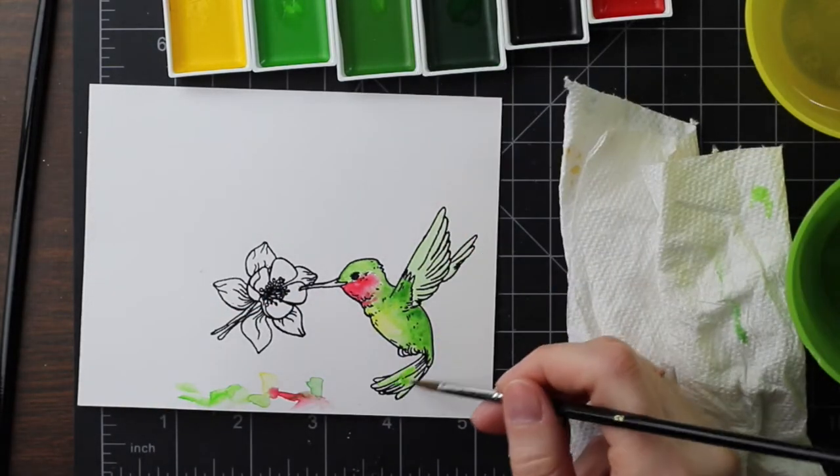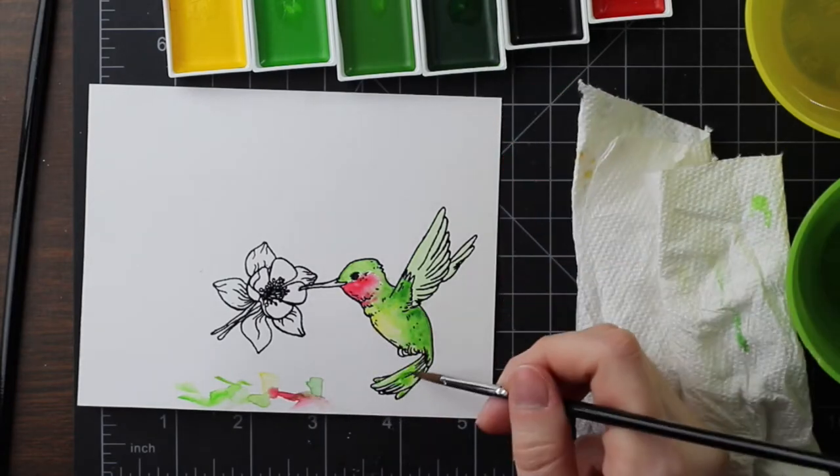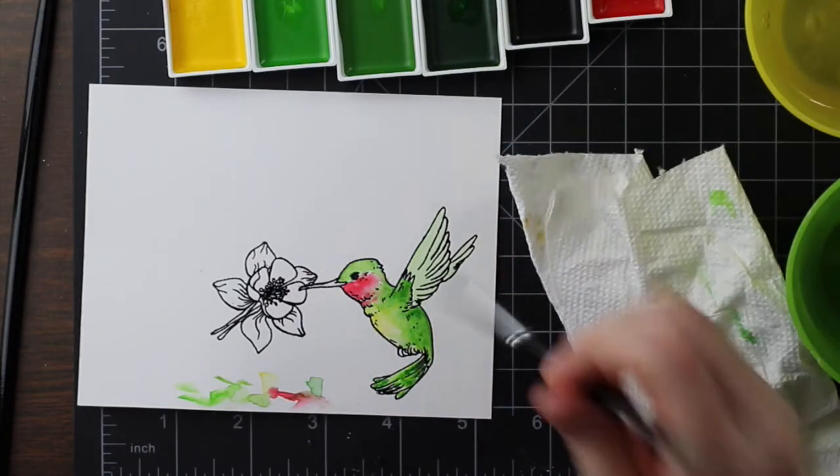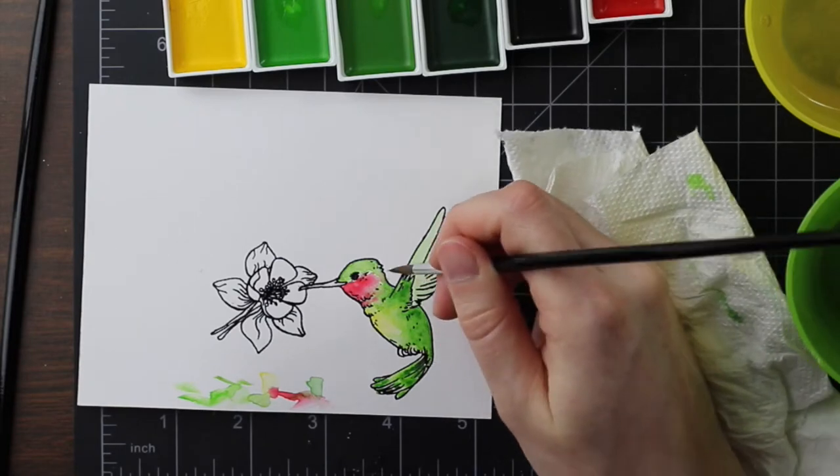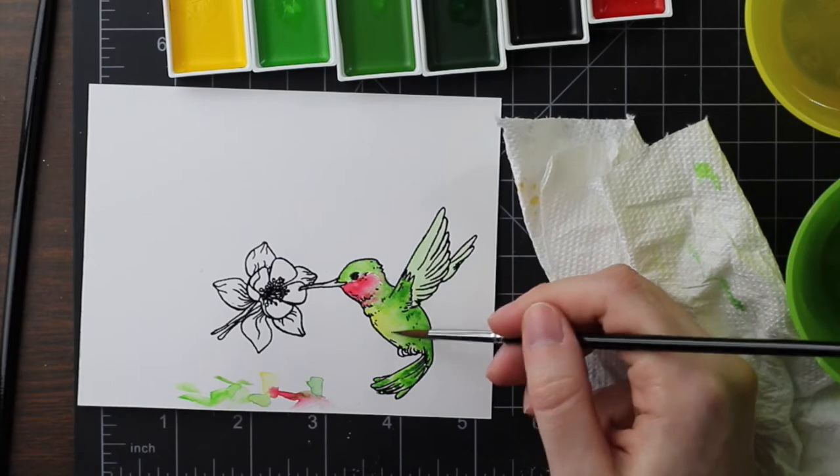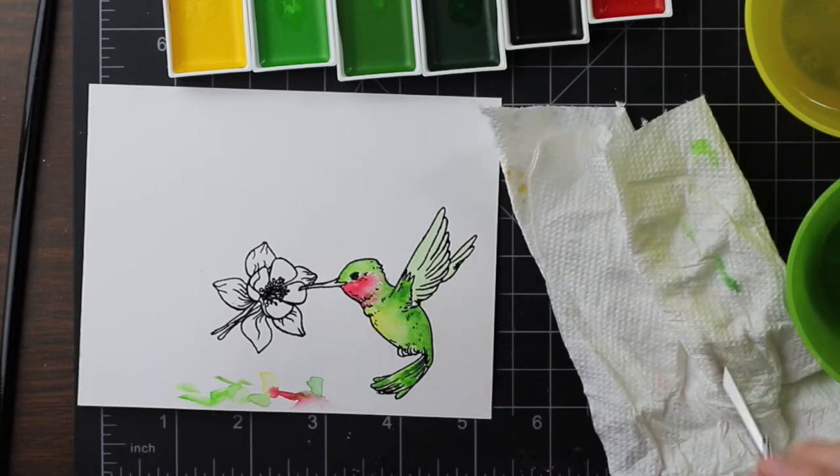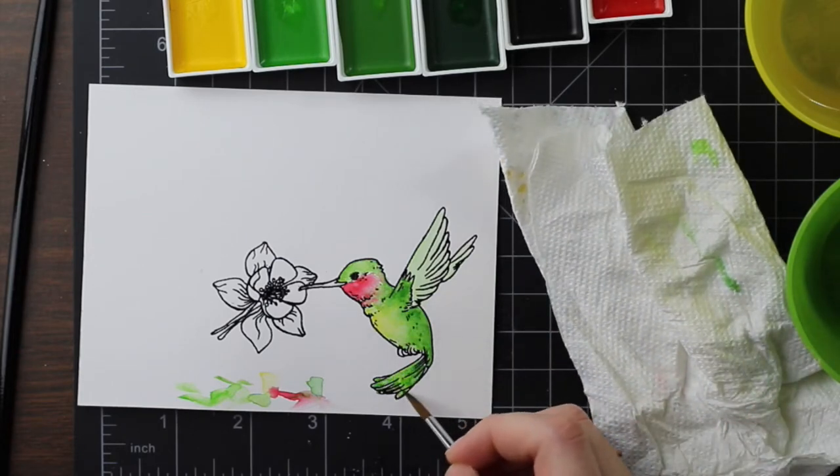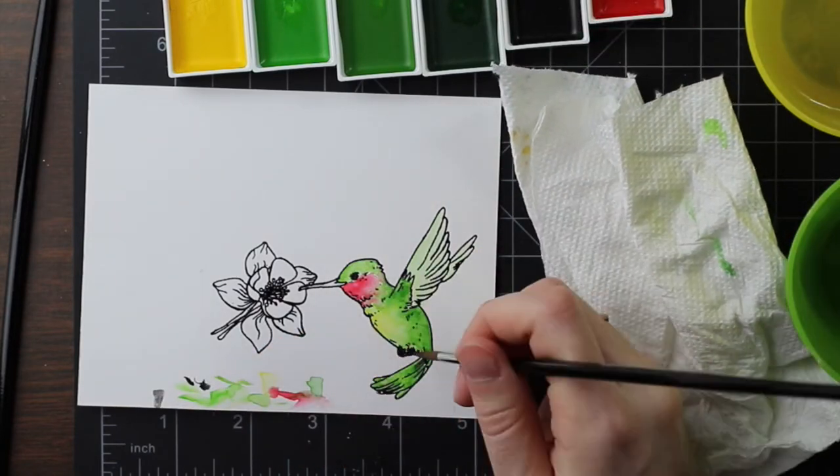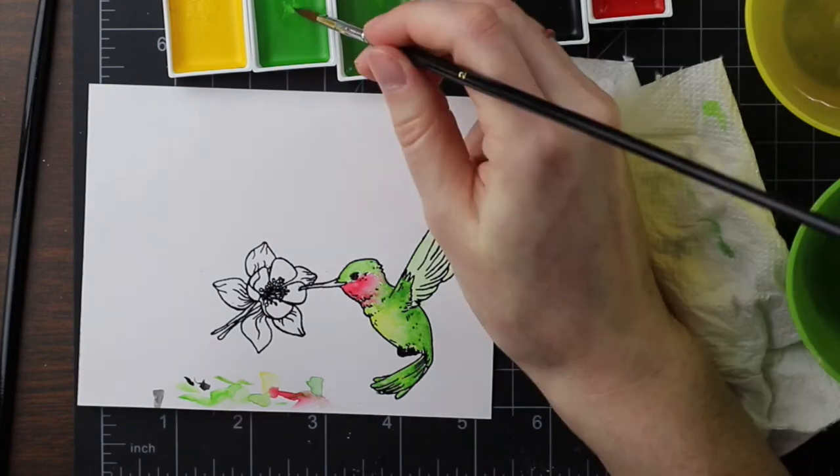And then I started adding some of the darker greens near the back of the hummingbird and underneath the wings and where the wings start. And then if you look at the stamp, there's a couple little details here and there. So you can kind of imagine feathers. And then I add a little bit of extra pigment, some of the darker green there, just because I'm assuming that's where it might be darker. I'm not someone who colors that often, so I'm kind of just guessing where the shading would be.